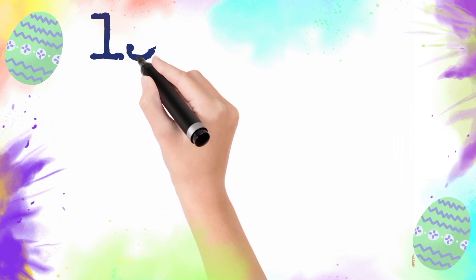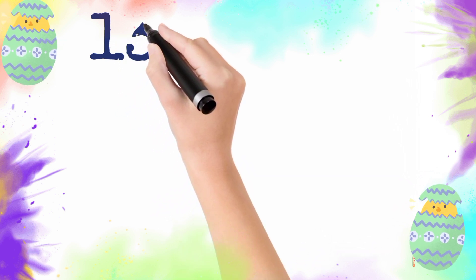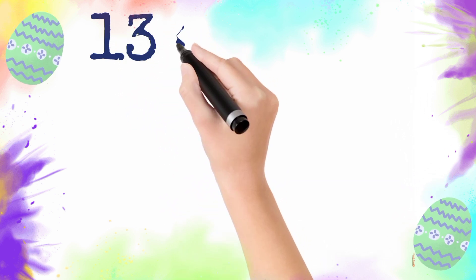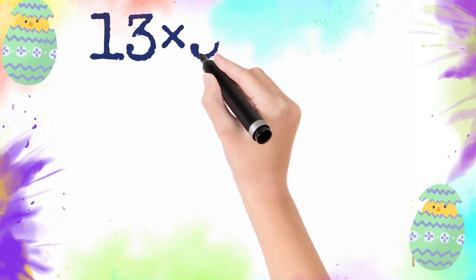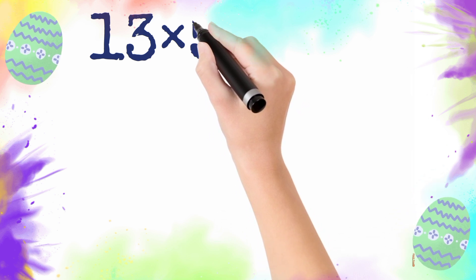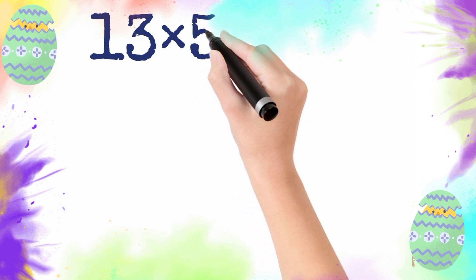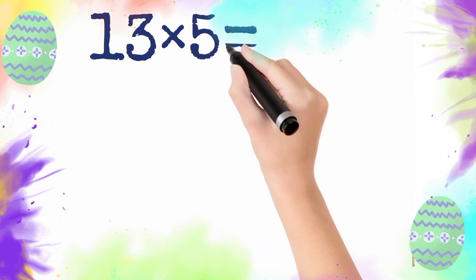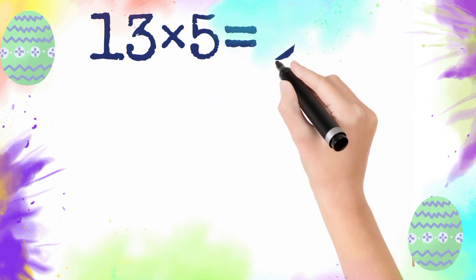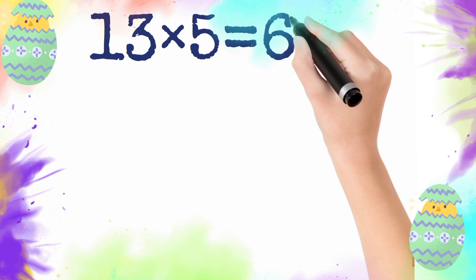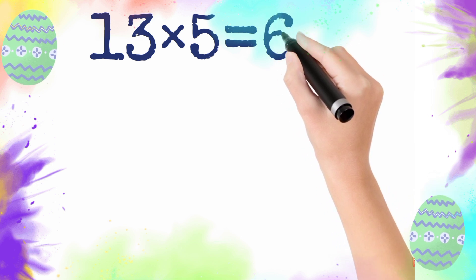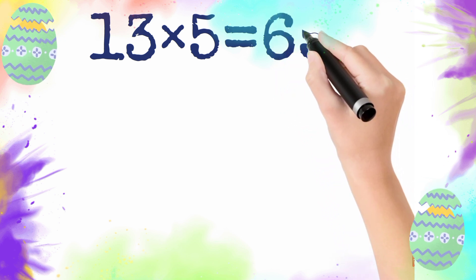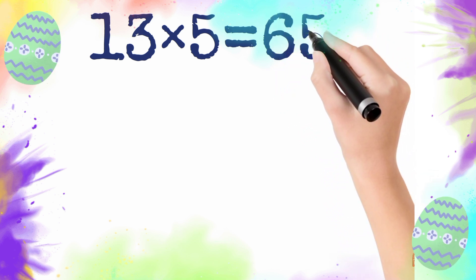13 multiply by 5 is equal to 65. So 13 times 5 is 65.